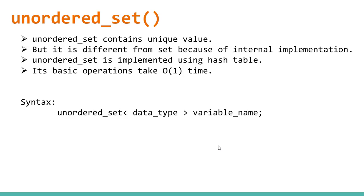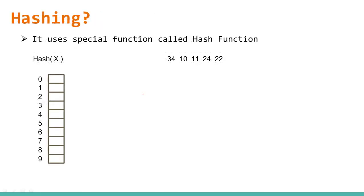Now, a basic introduction to hashing — assuming you already know hashing before studying unordered_set. Hashing is a simple data structure where we perform insert, search, and delete operations, all of which happen in O(1). This O(1) is achieved because of a special function called the hash function.